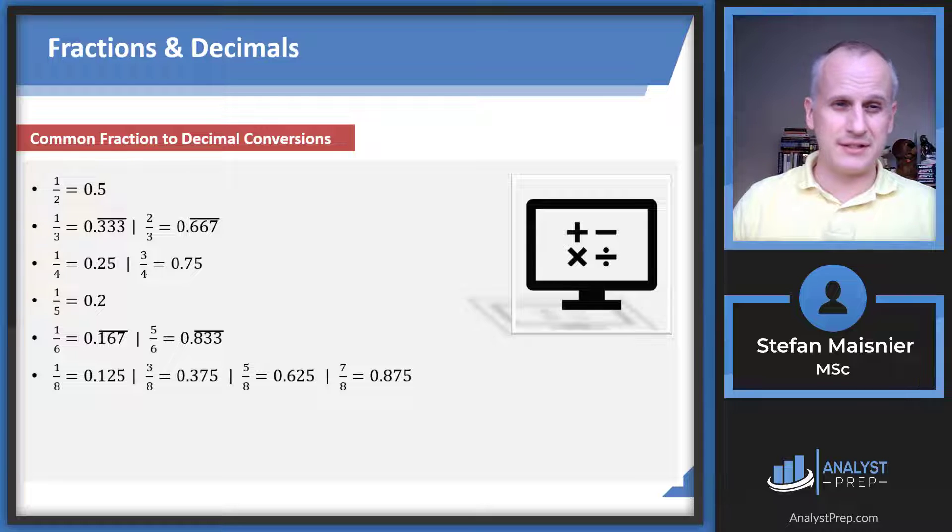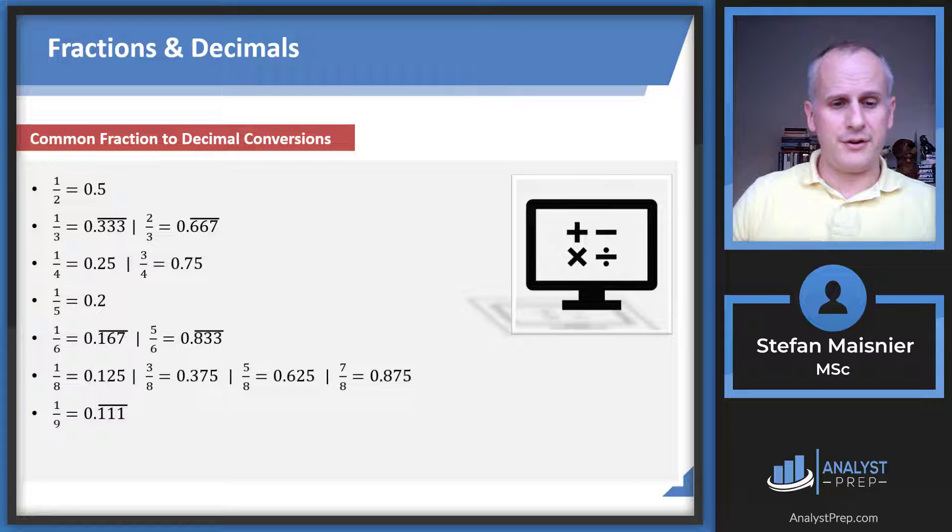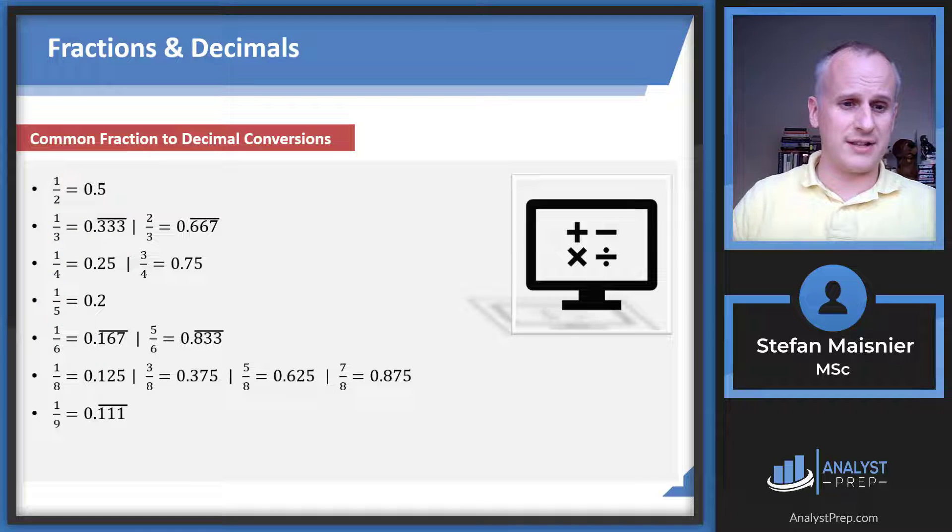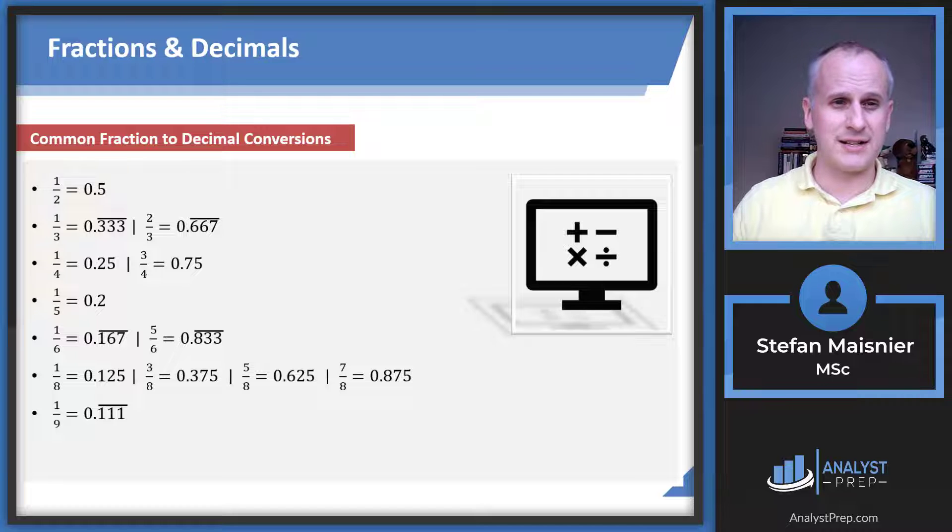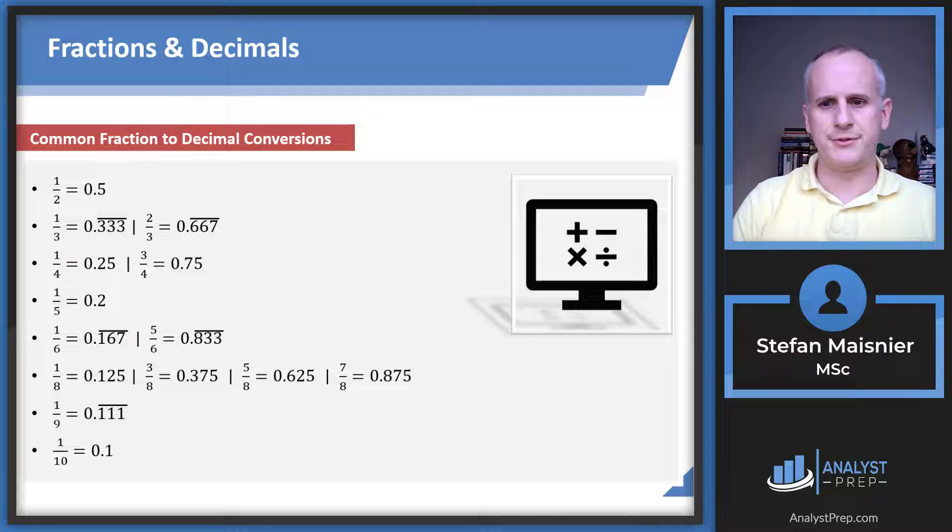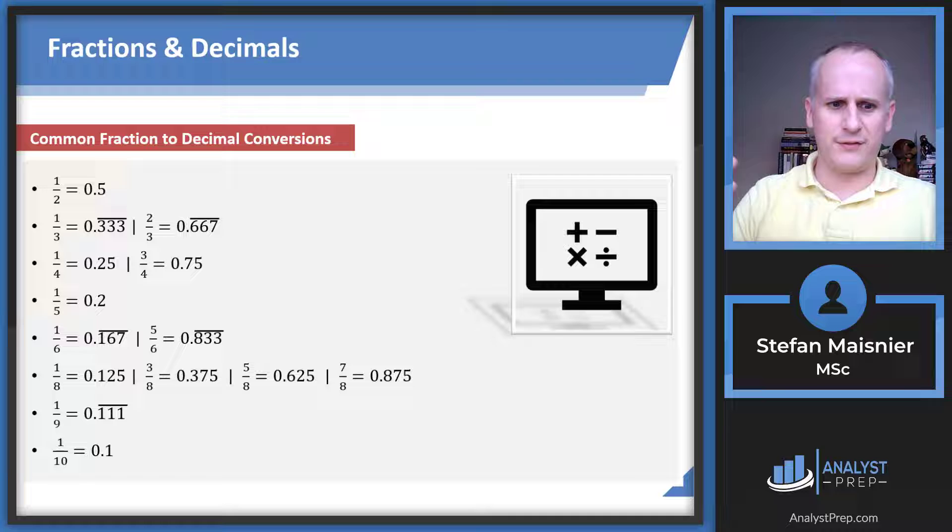One seventh isn't included because it's not a really clean repeating decimal, so the exam doesn't generally use it. One ninth is one third of one third, so that's 0.11 repeating. You can extrapolate any ninths, for instance seven ninths is 0.77777 repeating. One tenth is 0.1. This is the conversion point for fractions to decimals. Try to memorize these ones on the list.